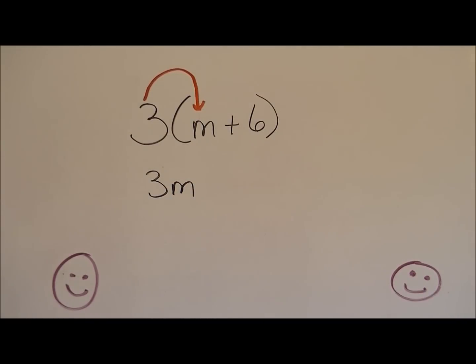And then now we're going to multiply the three times the six, and that would be 18. And the six is positive, there's a plus in front of it. So three times six is 18, and I'm just going to move my plus sign down. Let's look at another one.